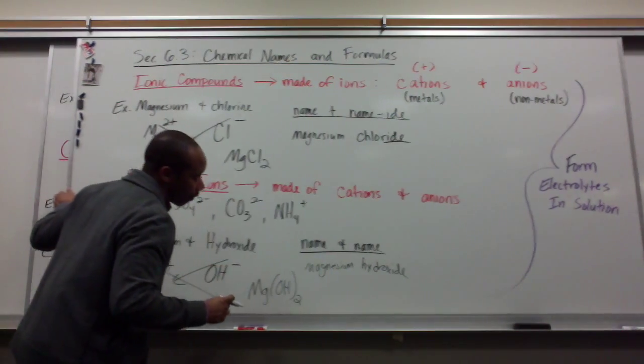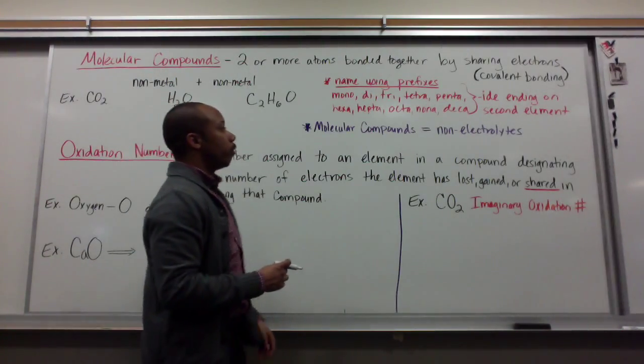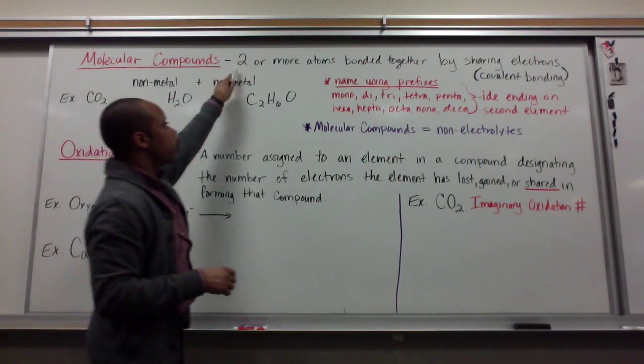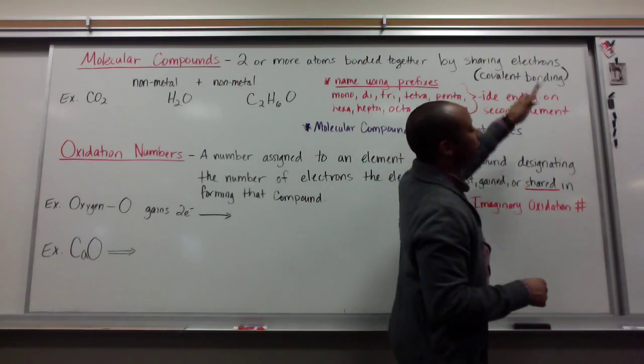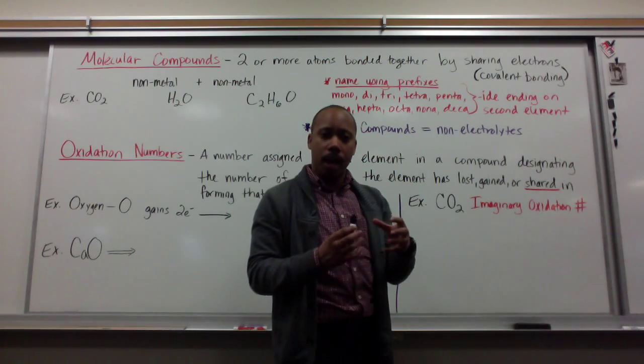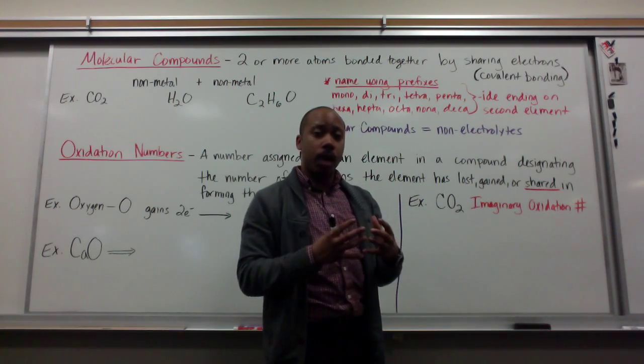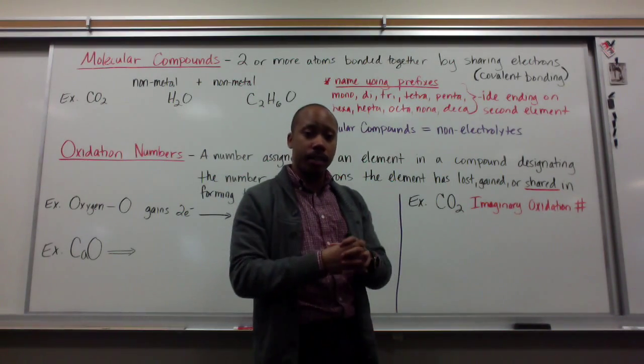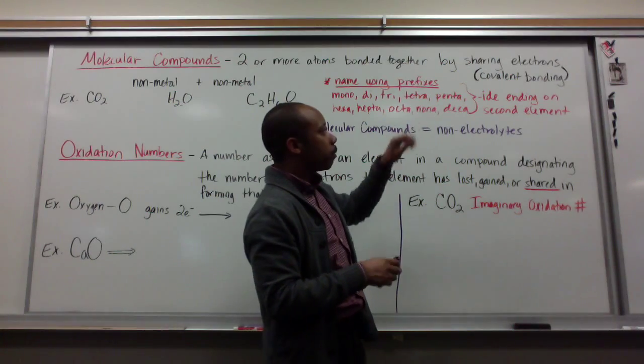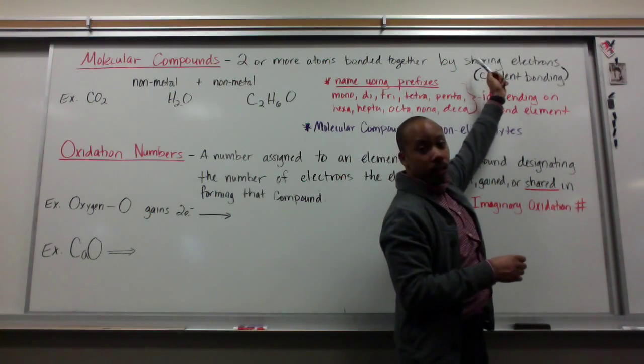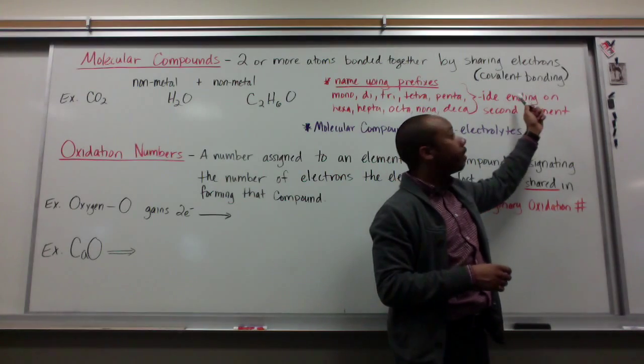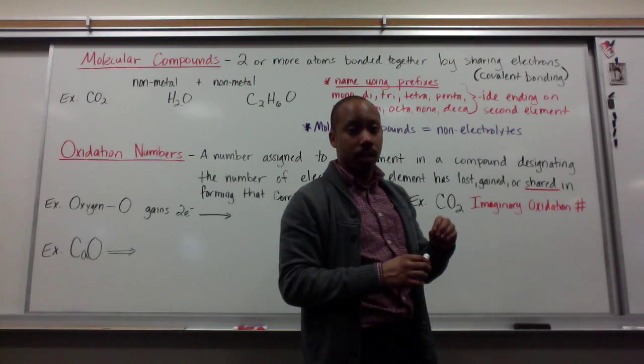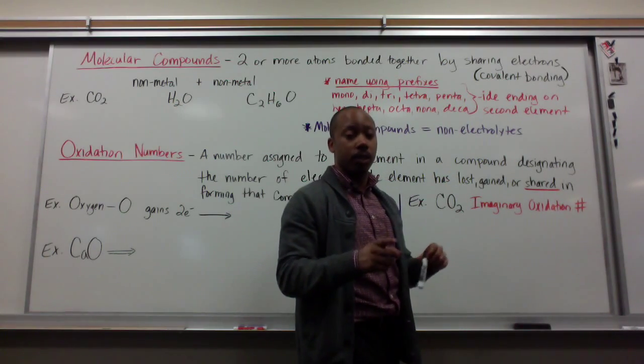Now, if we don't have ionic compounds, we've talked about molecular compounds. A molecular compound is when you have two or more atoms bonded together by sharing electrons. This terminology is very similar to what we've been talking about with compounds. Compounds are just two or more different atoms bonded. But with molecular compounds, it's specific, meaning it's when they're bonded through sharing electrons, or meaning they're covalently bonded. So, atoms that are covalently bonded are molecular compounds.